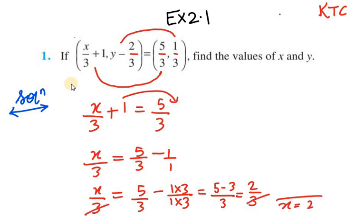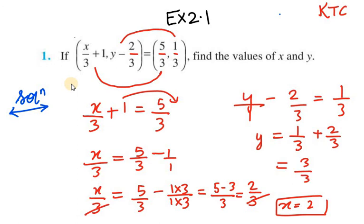Now the second one we have is y - 2/3 = 1/3. We need to bring minus 2/3 to the right hand side. So it will be y = 1/3 + 2/3. This will be 3/3 = 1. So y value is 1.